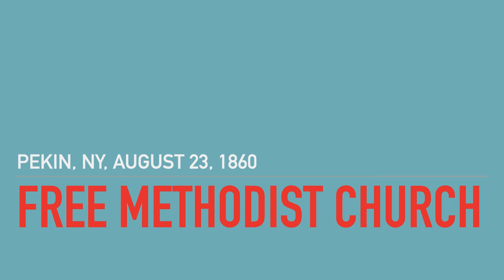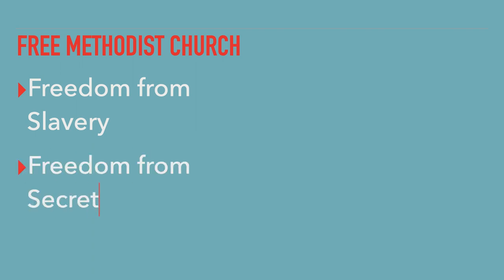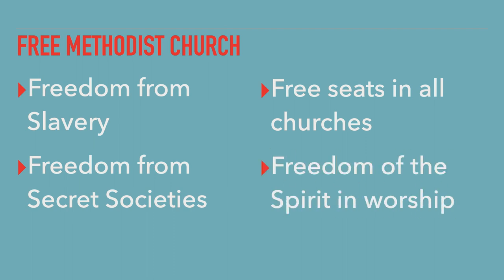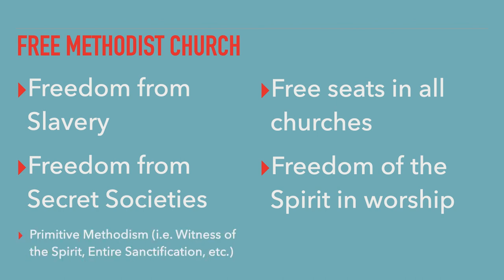This new denomination was to be marked by four main freedoms. First, freedom from slavery — this Methodism was committed to its abolition based on its firm stance on scripture. Second, freedom from secret societies, as Christ Jesus and his church holds his people's primary loyalties. Third, free seats in all churches, where all are welcome to come no matter the race, gender, or social status. And finally, the freedom of the spirit in worship, where worship wouldn't have to be constrained by certain liturgies or behaviors. Additionally, this new Free Methodist Church reaffirmed its commitment to the doctrines and usages of primitive Methodism, including the witness of the spirit and entire sanctification, and an equal representation of ministers and lay members in all of the councils of the church.